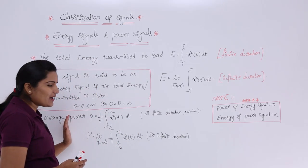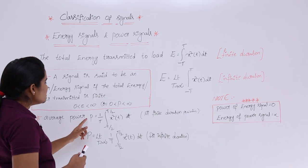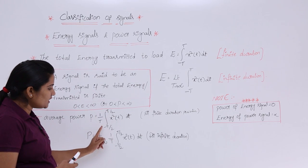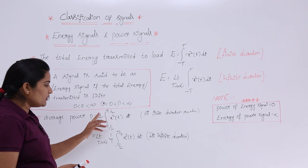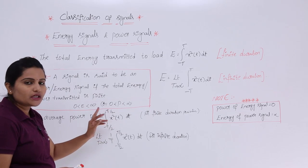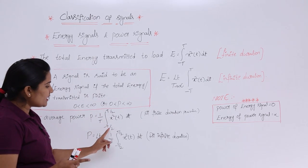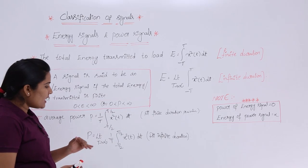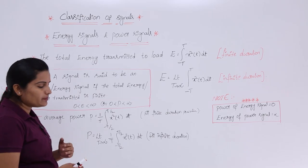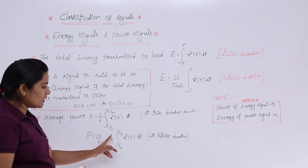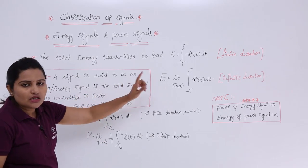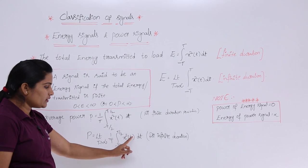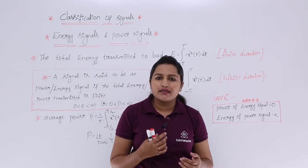Similarly, we have formulas to calculate the average power of a signal. Power P equals 1 by T integral from minus T/2 to T/2 of x squared of t dt for finite duration. Note: some textbooks use 1 by 2T with limits minus T to T — both are equivalent. For infinite duration power, take the limit as T tends to infinity of 1 by T integral from minus T/2 to T/2 of x squared of t dt.